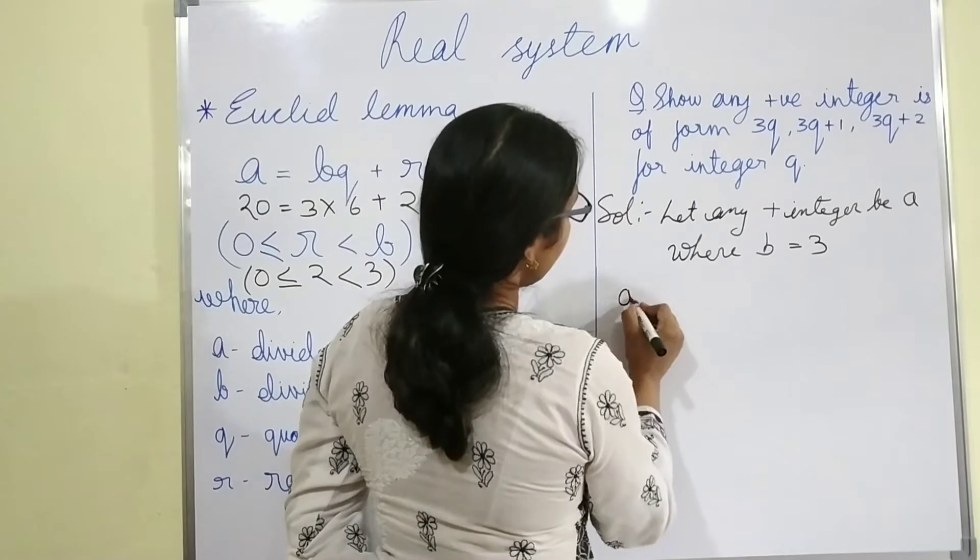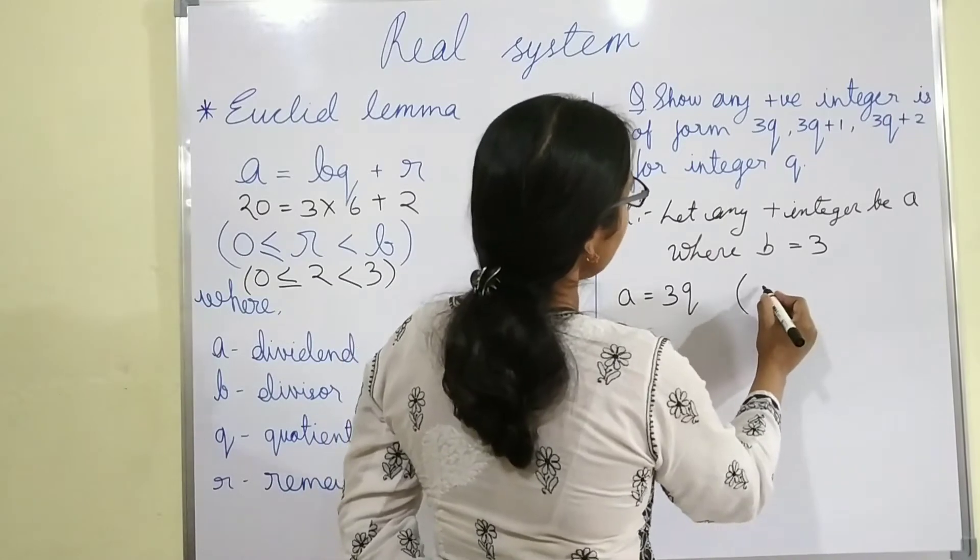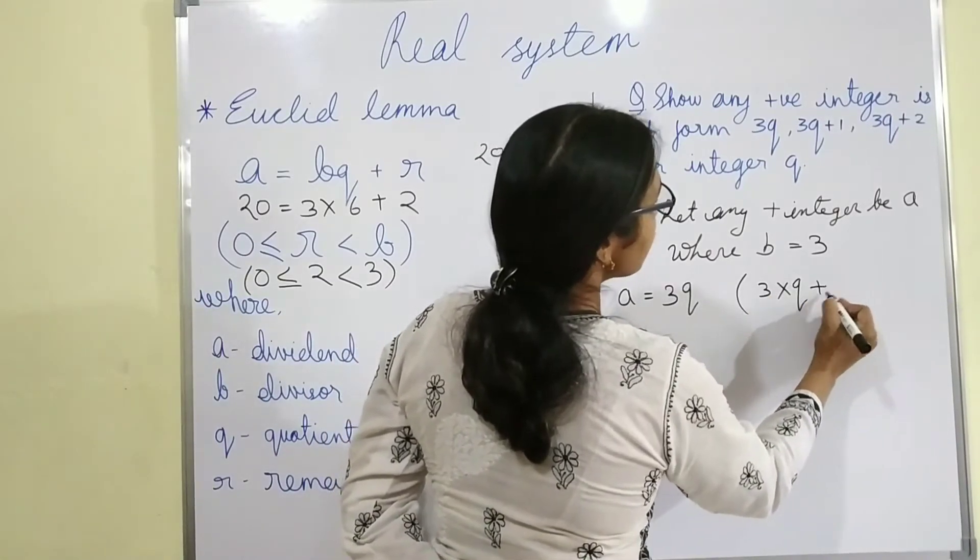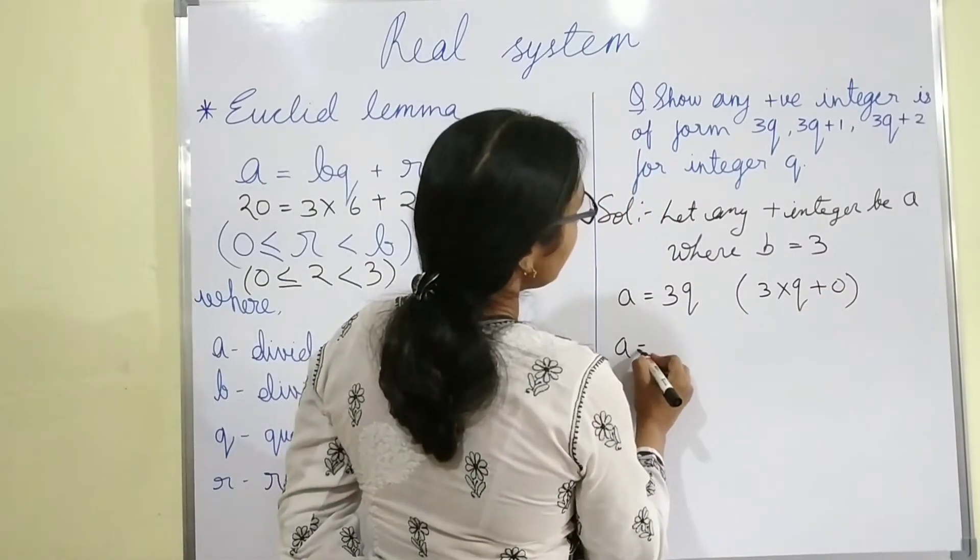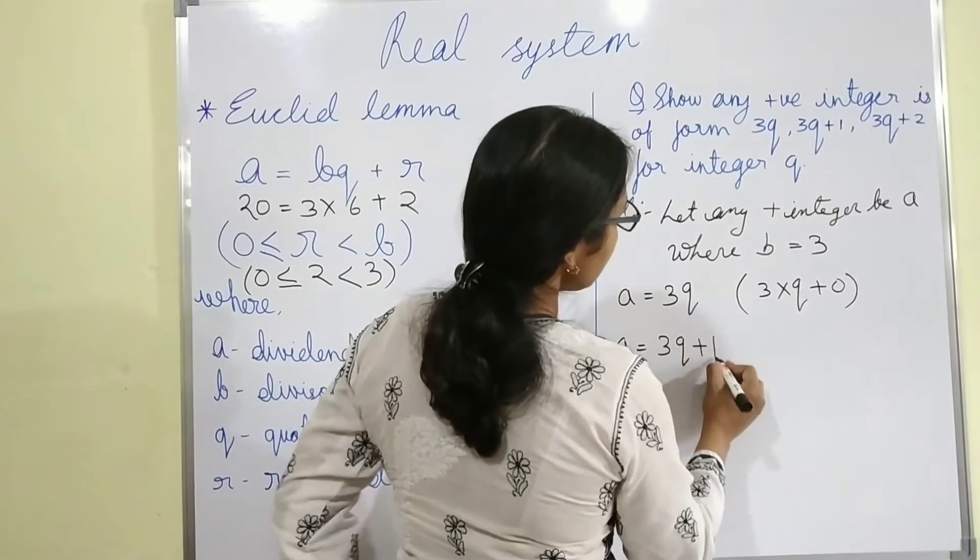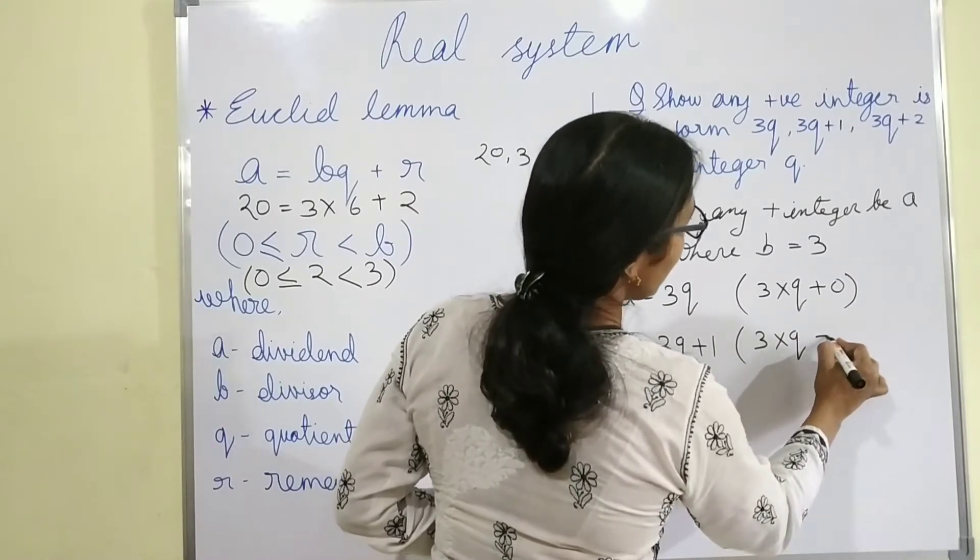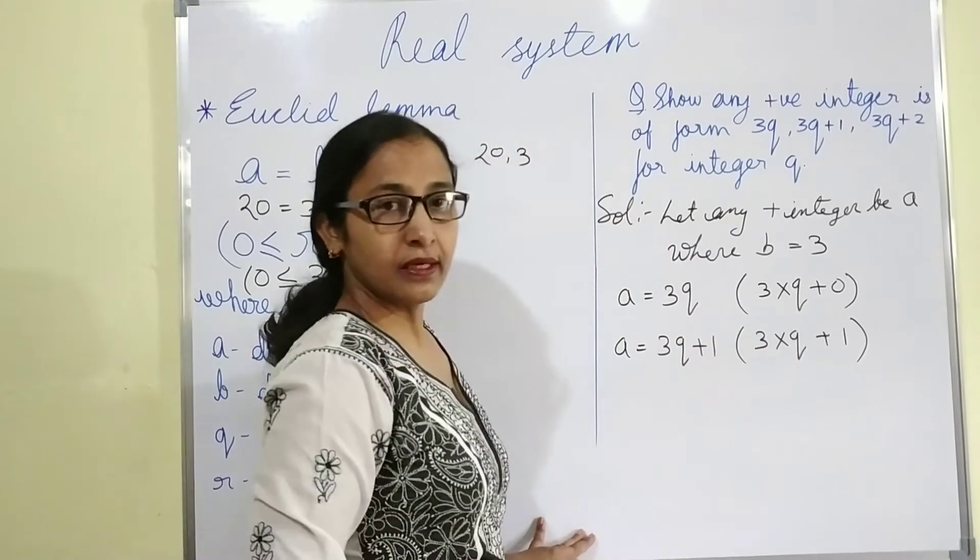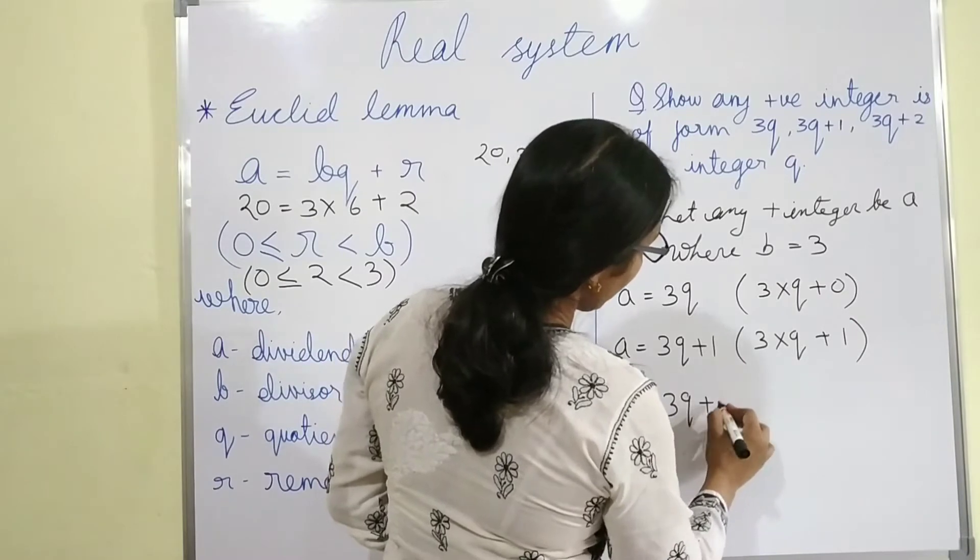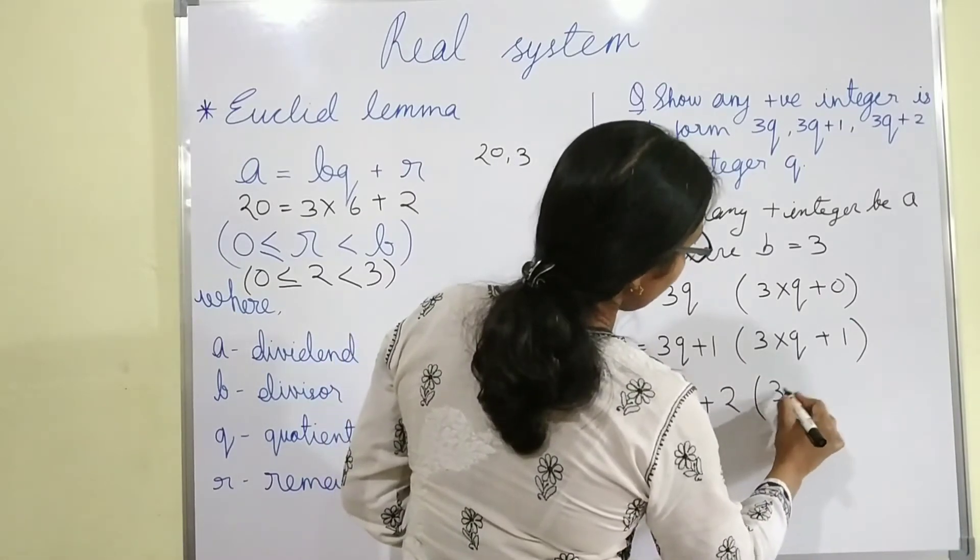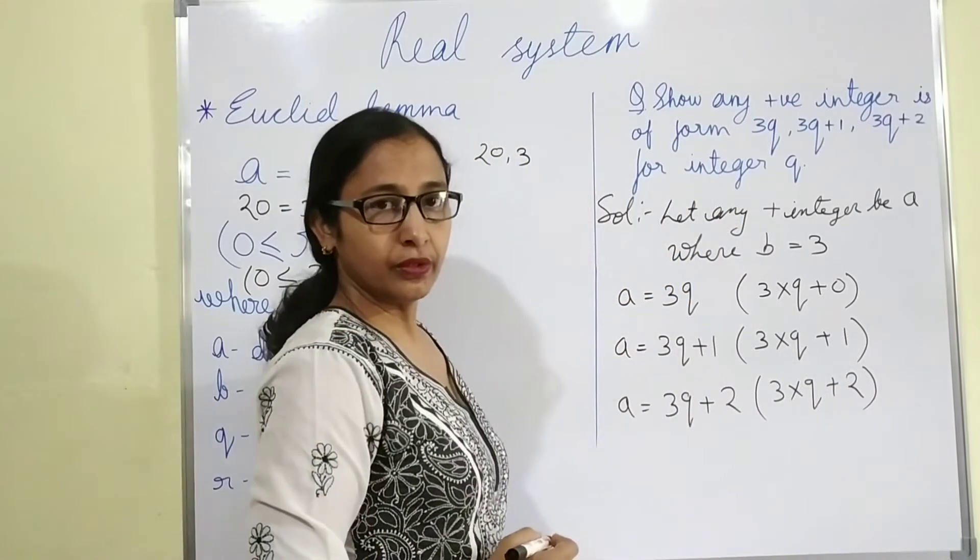So A equals to 3Q, so Euclid's algorithm will be 3 into Q plus 0. Here the remainder is 0. Now A equals to 3Q plus 1, so lemma will be 3 into Q plus 1. Here the remainder is 1. A equals to 3Q plus 2, so 3 into Q plus 2.